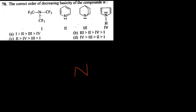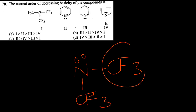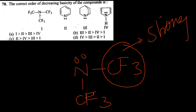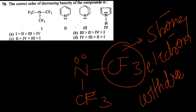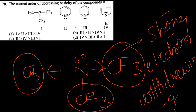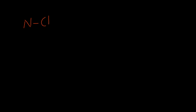Another example: the correct order of decreasing basicity. One important thing: when CF3 is attached to nitrogen, it is a very strong electron-withdrawing group. It inductively withdraws electrons so strongly that it becomes comparable to any mesomeric effect. So its basic strength will be the least.